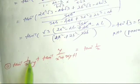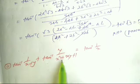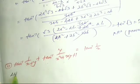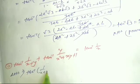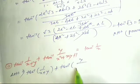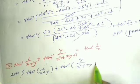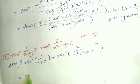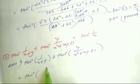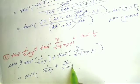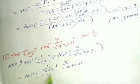Next question: prove that tan⁻¹(1/(x+y)) + tan⁻¹(y/(x²+xy+1)) = tan⁻¹(1/x). Taking LHS: tan⁻¹(1/(x+y)) + tan⁻¹(y/(x²+xy+1)). Applying the tan⁻¹x + tan⁻¹y formula.